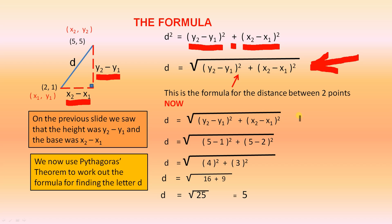d equals the square root of (y₂ minus y₁) all squared, plus (x₂ minus x₁) all squared. So you just substitute those values in there. Then we do some simplification, because 5 minus 1 is 4, 5 minus 2 is 3, 4 squared is 16, 3 squared is 9, 16 plus 9 is 25. So d is the square root of 25, which is 5, so the length of the interval is 5 units.